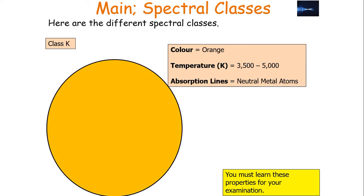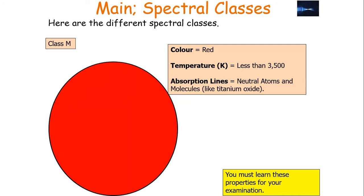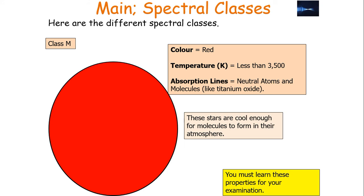Class G stars are yellow-white in colour, with a temperature between 6,000 and 7,500 K, and absorption lines from metal ions and metal atoms — this is the class the Sun is currently in. Class K stars are orange, with a temperature between 3,500 and 5,000 K, and absorption lines in neutral metal atoms. Class M stars are red, with a temperature below 3,500 K, and have absorption lines from neutral atoms and molecules like titanium oxide, because these stars are cool enough for molecules to form in their atmospheres.